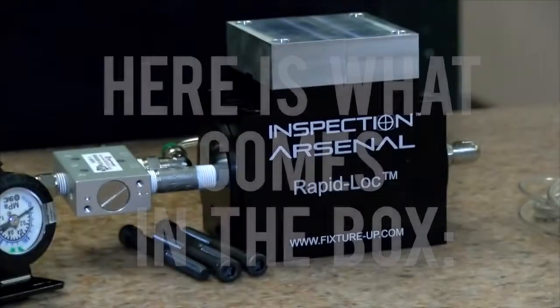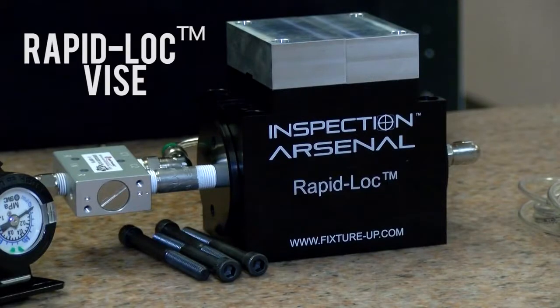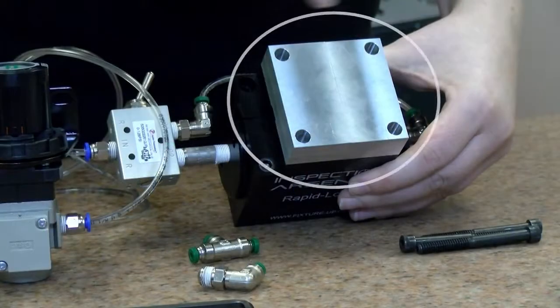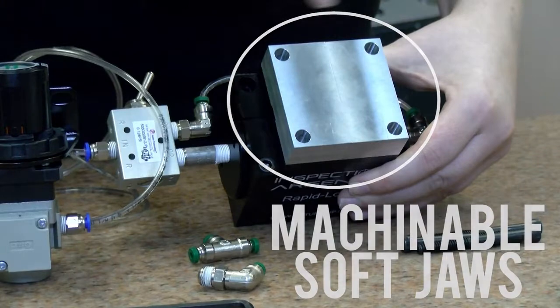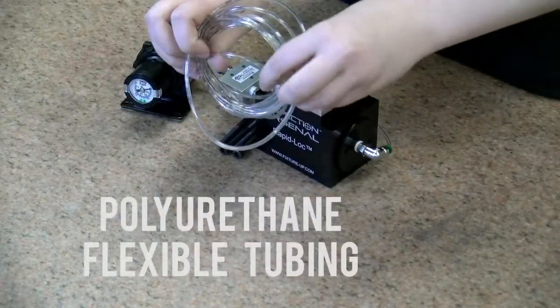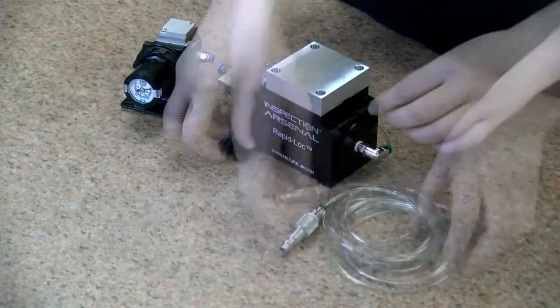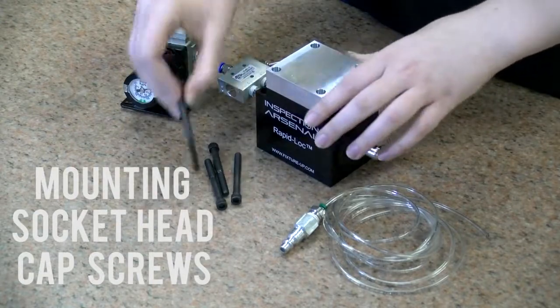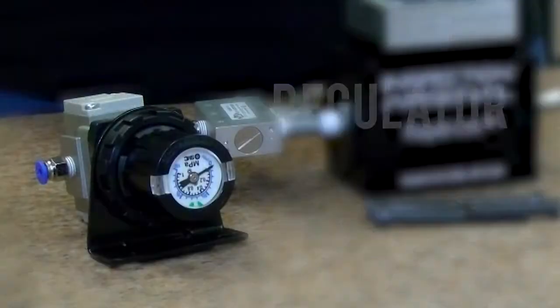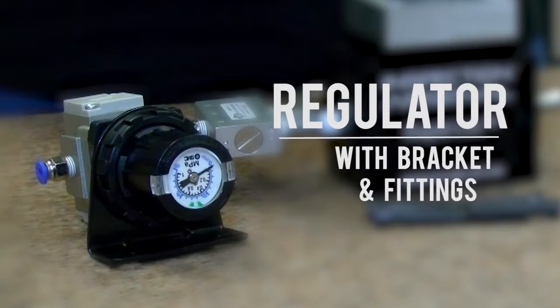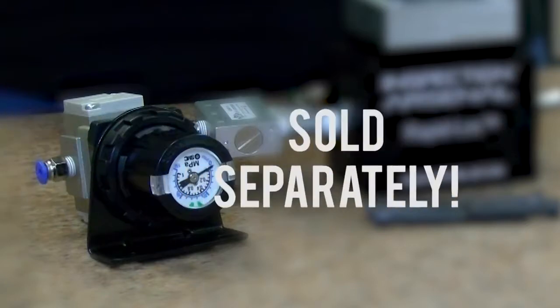Here is what comes in the box. A RapidLock vise with fittings, one set of machinable soft jaws, six feet of polyurethane flexible tubing, and mounting socket head cap screws for vise. Be sure to also order a regulator with bracket and fittings attached. It is sold separately.